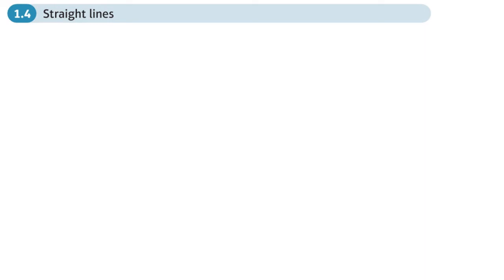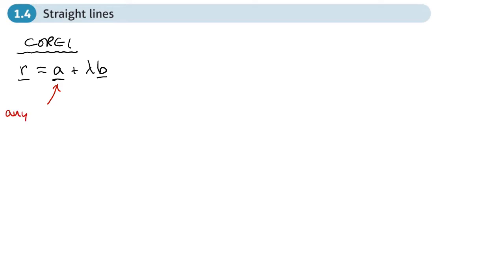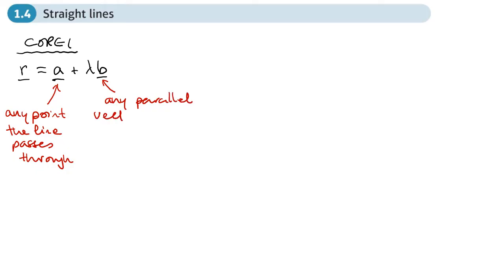This is the full section of chapter 1 on vectors, and here we're going to be looking at straight lines. You'll know from your Core 1 that you could write the equation of a straight line as r equals a plus lambda b, where a was a point that the line passes through and b was any parallel vector to the line.